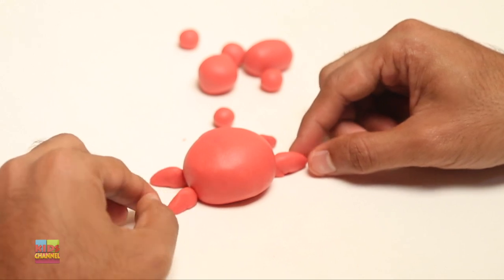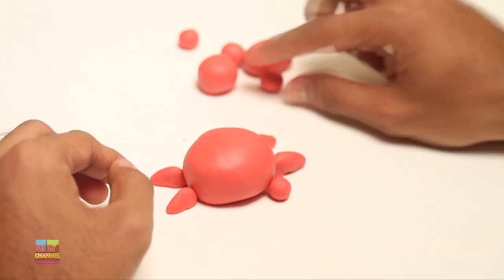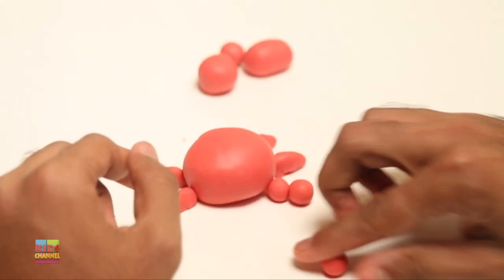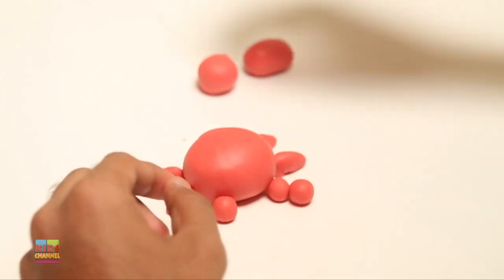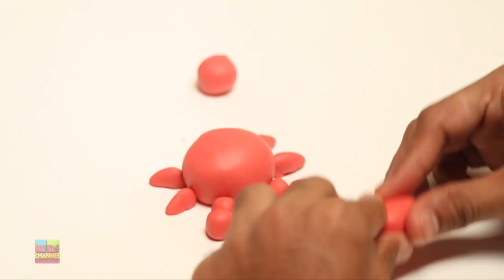Now we're ready to take the other balls. Let's start with these small ones and just connect them up front. So we have a crab's body and you can see his legs sticking out from the side.